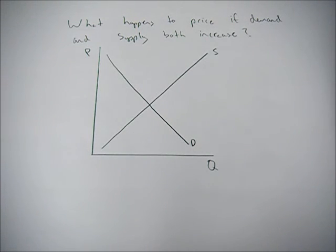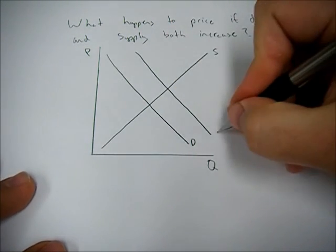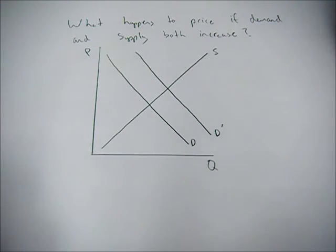And so now we're going to increase both demand and supply. So first, I'll increase demand. It shifts to the right or up, an increase. And then I'm going to shift supply to the right or down, an increase.